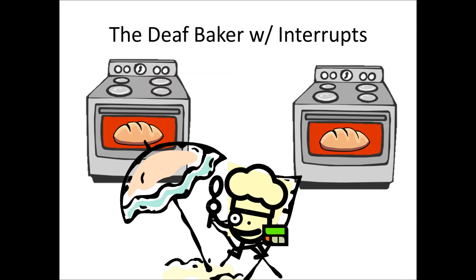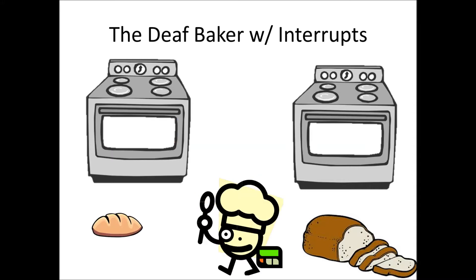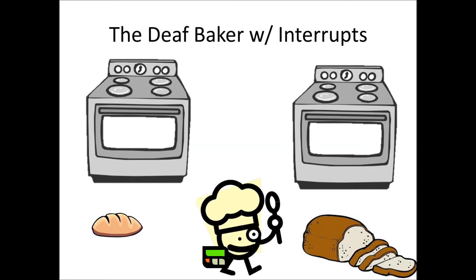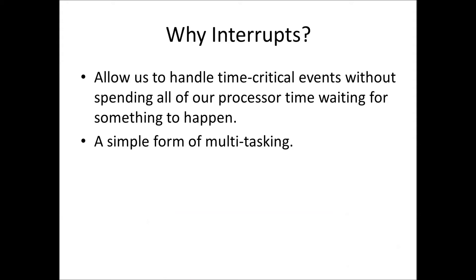So let's try this with interrupts. Now the baker has a pager — something that vibrates whenever one of the two pieces of bread is done. Instead of having to watch the two ovens, when one piece of bread is done, the pager will buzz. He'll go start slicing the bread, but he still has the pager. When it buzzes again for the other oven, he can stop slicing, go take it out of the oven, finish slicing the first piece of bread, slice the second piece, and go back to sitting on the beach drinking mojitos.